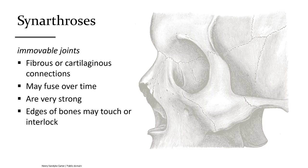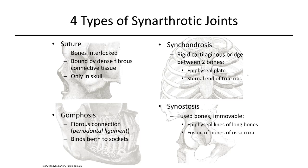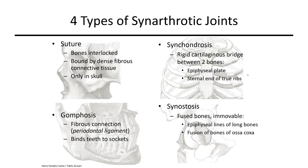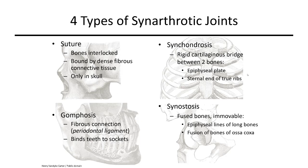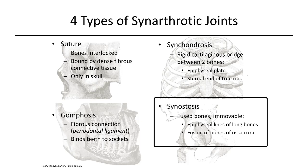Synarthrosis joints do not allow for movement. Whether fibrous or cartilaginous, interlocking bones may fuse together over time as occurs in the skull. There are four main groups: sutures, whose edges interlock like puzzle pieces to form the skull; synchondrosis, which use hyaline cartilage as in the ribs-sternum connection or growth plates in kids. These growth plates, the epiphyseal plates, become fused bone known as the epiphyseal line, which is a synostosis joint.